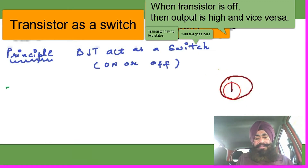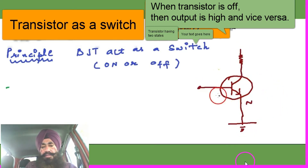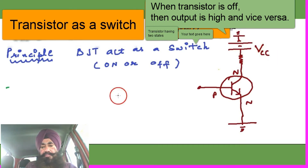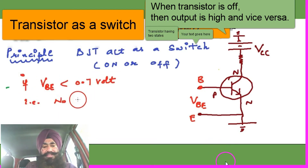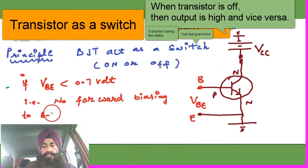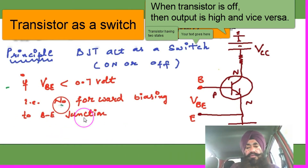Now, how does the transistor act as a switch? Let's learn about it. This is an emitter — the emitter is grounded. The collector is given a positive supply, and then grounded. VCC is the supply and this is the ground terminal. The voltage between the base and ground — this input voltage — if it is less than 0.7 volts, there is no forward bias, and then the transistor is off. The transistor is in the off state without forward biasing.